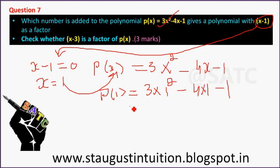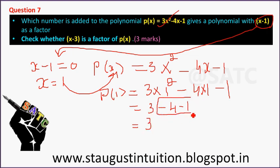p(1) equals 3 times 1 squared minus 4 times 1 minus 1. This is equal to 3 minus 4 minus 1, which equals minus 2. So x minus 1 is a factor since the remainder gives that result.